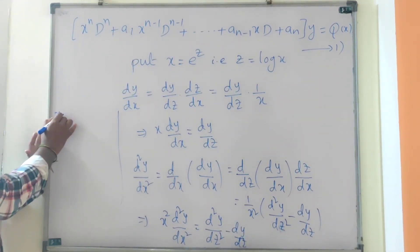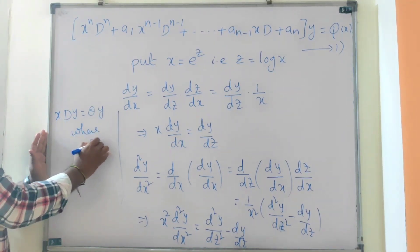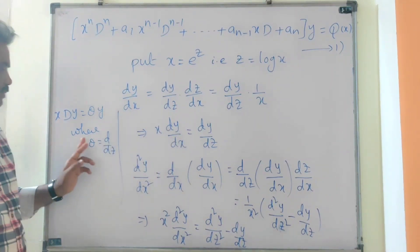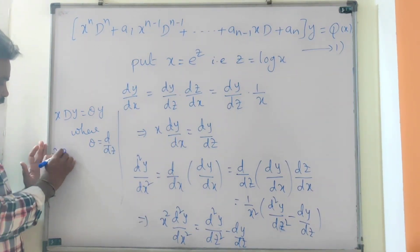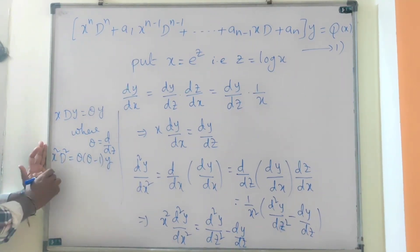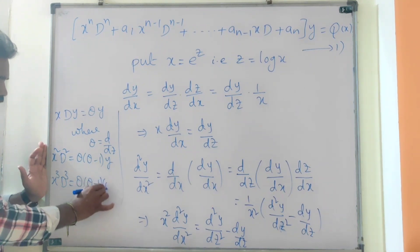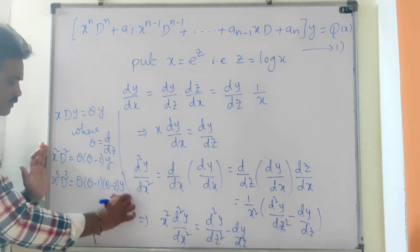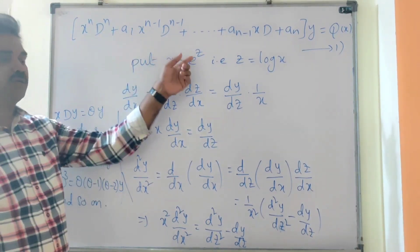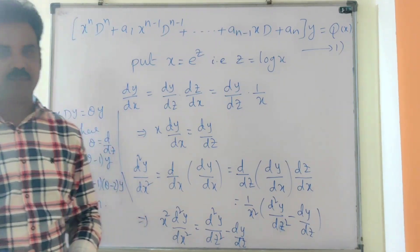Now, letting θ = d/dz, this becomes: xD = θy, x²D² = θ(θ−1)y, and x³D³ = θ(θ−1)(θ−2)y, and so on. Substituting all these values into the original equation gives a linear differential equation with constant coefficients.